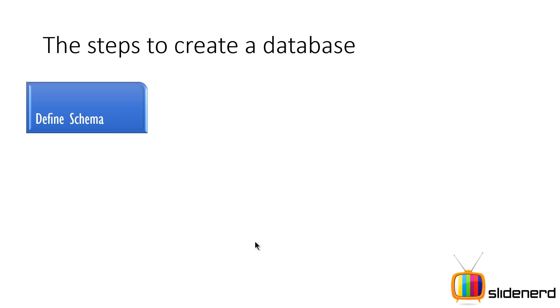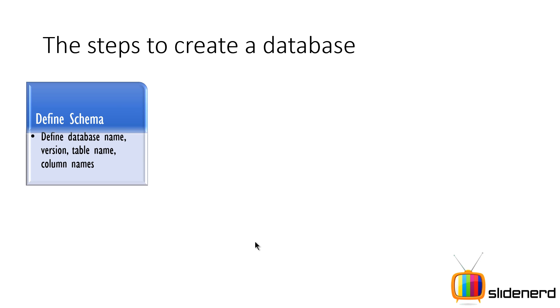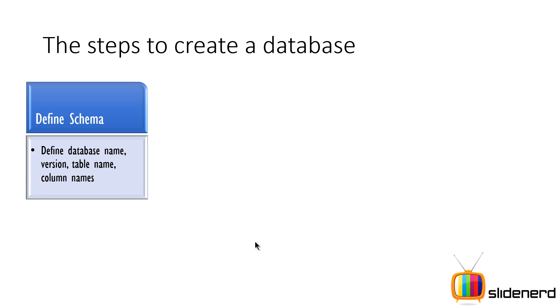Step 1: Define the schema. This includes specifying the database name, the version, the table name, and the column names that you have. Of course, there can be more than one table and there are several columns.